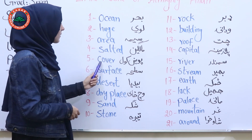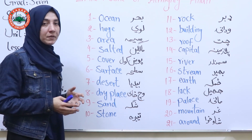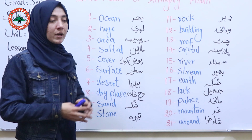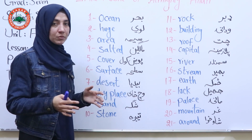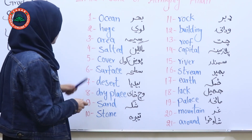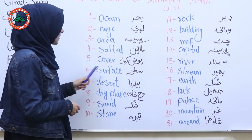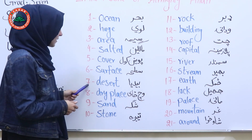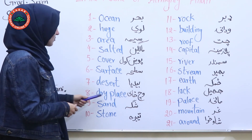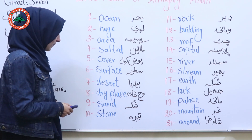Number 5: cover — pooh kawol. Number 6: surface — satha. Number 7: desert — bedya. Number 8: dry place — witch zai. Number 9: sand — sugar.